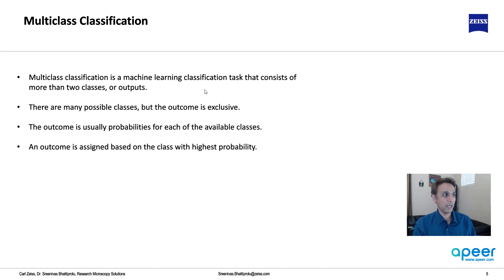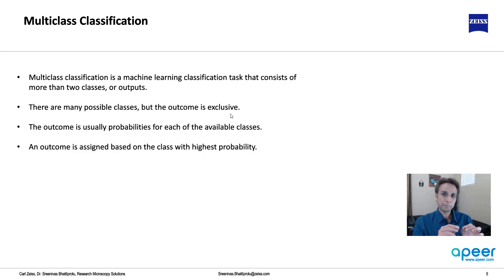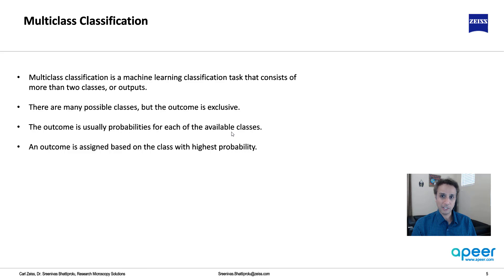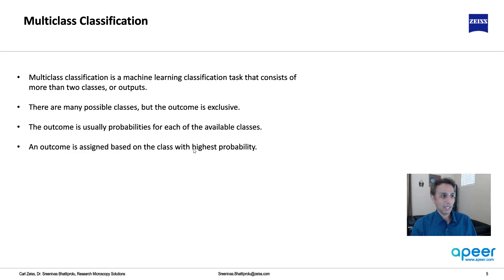Multi-class classification involves more than two classes, but the outcome is mutually exclusive — meaning if it is a cat, it cannot be a dog or anything else; it is a cat. Even though there are many classes, each outcome belongs to only one of them. The output is probabilities for each available class — for example, 0.92 for cat and 0.1 for dog — and the outcome is assigned to the class with the highest probability.